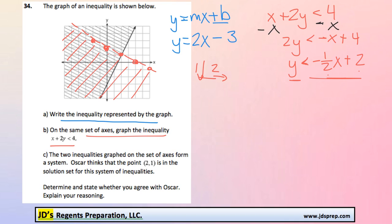Now on to the last part of the question. The two inequalities graphed on the set of axes form a system. Oscar thinks that the point 2, 1 is in the solution set. So let's take a look at this graphically. The point 2, 1 is, here's my change to a different color. So 2, 1 is right here.